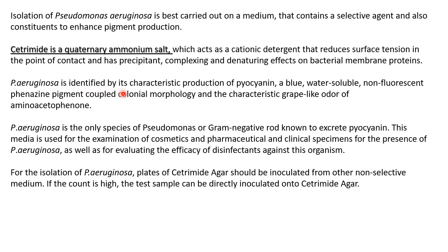Pseudomonas aeruginosa is identified by its characteristic production of pyocyanin. Pyocyanin and pyoverdine are the pigments produced by Pseudomonas. Pyocyanin is actually a blue, water-soluble, non-fluorescent phenazine pigment, coupled with the colony morphology and the characteristic grape-like odor of amino acetophenol.